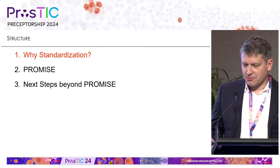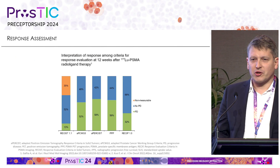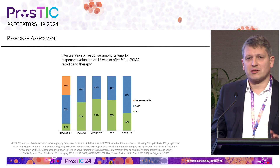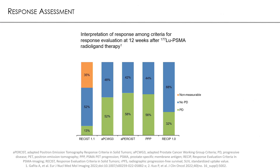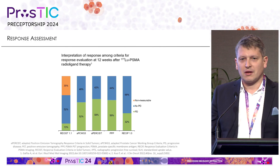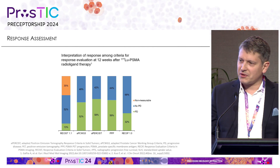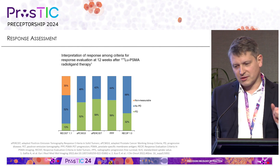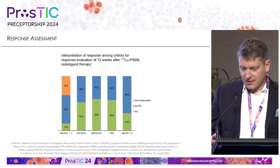The most important slide is actually this one. It shows the same group of patients undergoing PSMA ligand therapy, and they are classified as either progressive disease, no progressive disease, or non-measurable. The number of patients classified as progressive disease varies between 13% on the far left up to 58% for APERSIST, just depending on what response criteria were used. This is why we need to standardize the way we report and assess response.